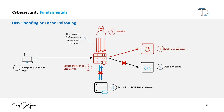When a user attempts to access a legitimate website, the user's computer will first check its local DNS cache for the IP address associated with the domain. If the cache contains the forged information, the user's computer will be directed to the attacker's IP address instead of the legitimate website, potentially exposing the user to malware or a phishing attack. Cache poisoning can also occur if an attacker is able to gain access to the DNS server itself and alter the records stored in it.